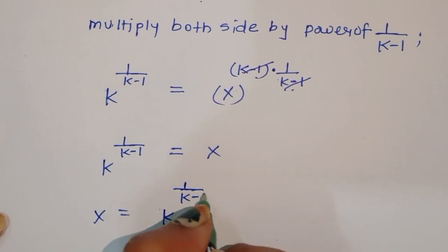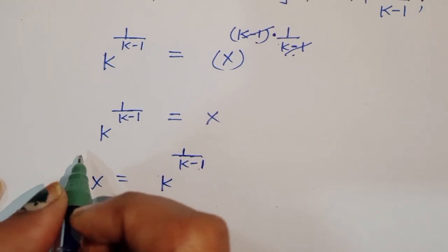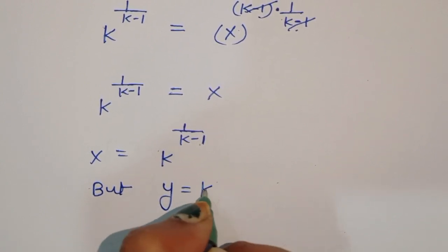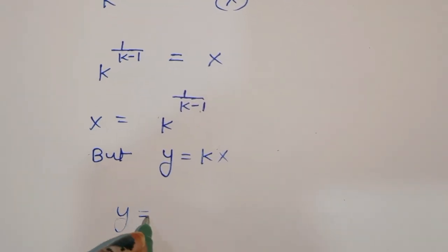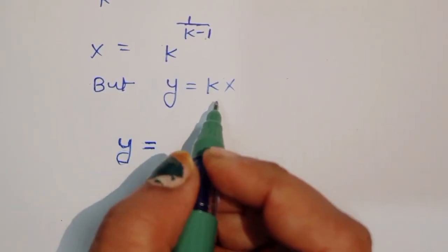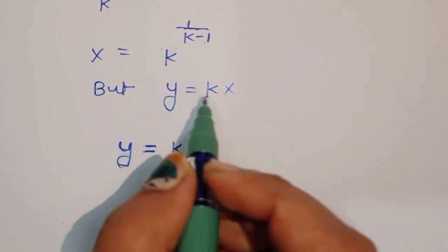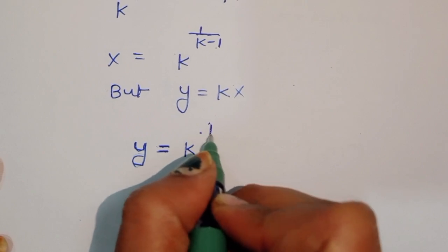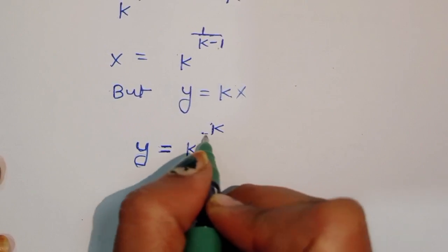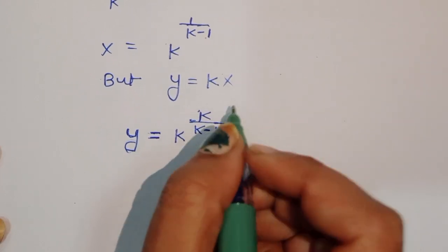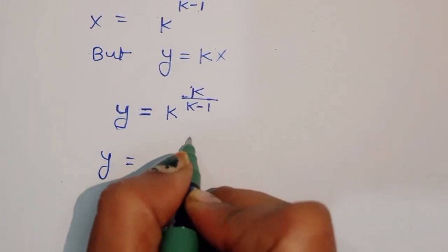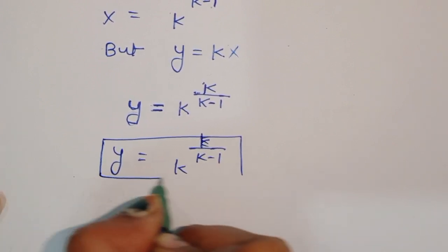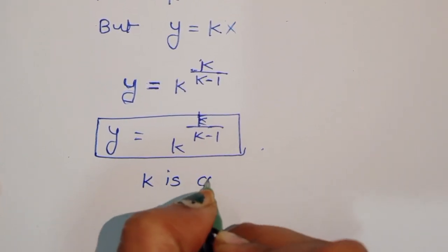Since we already considered y = kx, the value of y is k times x, which gives y = k · k^(1/(k−1)) = k^(k/(k−1)). So x = k^(1/(k−1)) and y = k^(k/(k−1)).